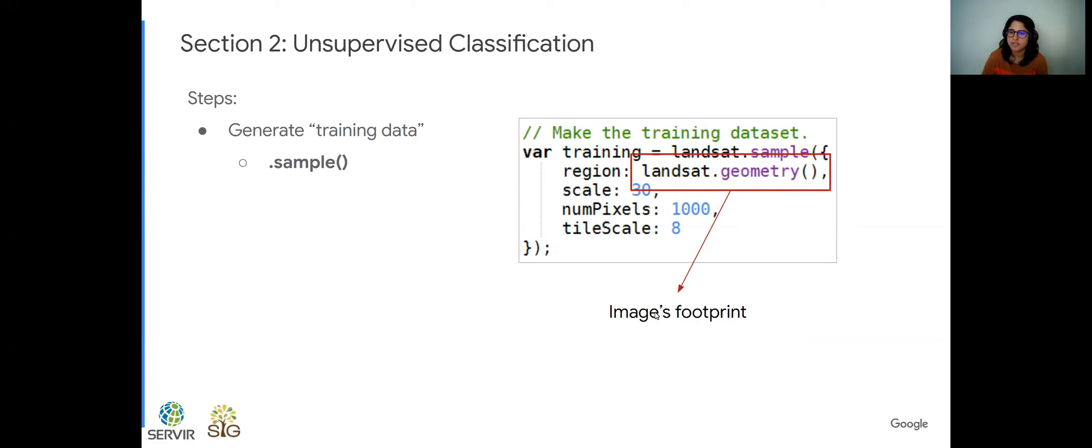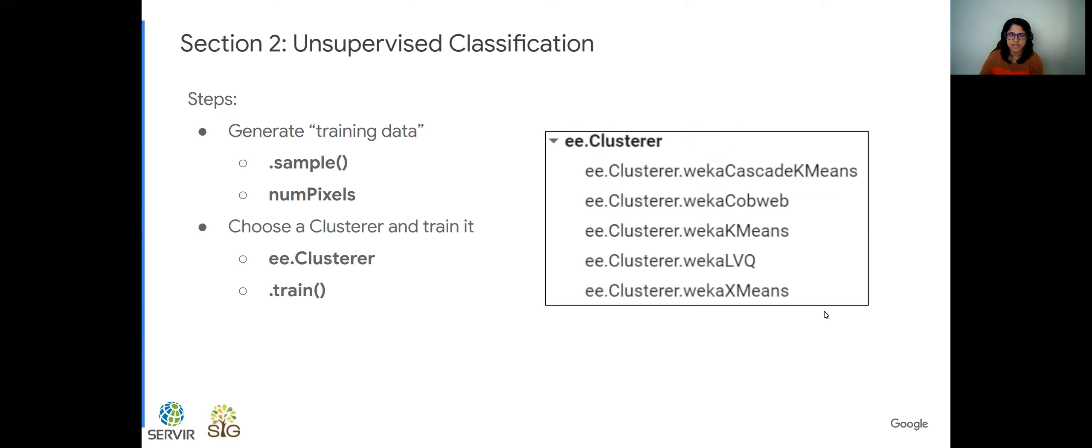The region here, we have to specify a region from where to sample. So here we're going to use the image footprint. So Landsat is our variable. We just do dot geometry, which grabs the footprint of that image as a geometry. And we also need to define the number of pixels we want to sample. So in this case, the example is going to use a thousand pixels to sample from. We had a hundred training points for the supervised classification. Now we want a thousand pixels of information, and that would be our training data.